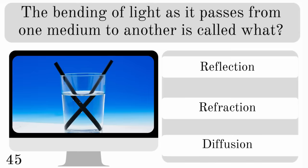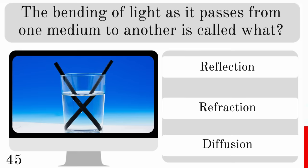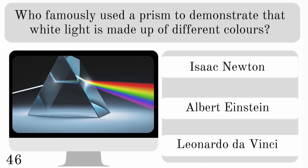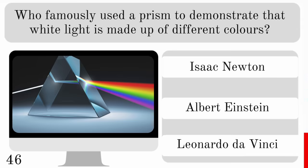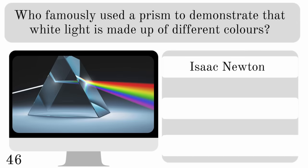The bending of light as it passes from one medium to another is called what — reflection, refraction or diffusion? It is refraction. Who famously used a prism to demonstrate that white light is made up of different colours — Isaac Newton, Albert Einstein or Leonardo da Vinci? That was done by Isaac Newton.